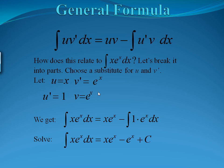Once we have our u and our v', we need to find u' and v. So u is x and v' is eˣ. To get u', we take the derivative of u — the derivative of x is just 1. To get our v, we take the antiderivative of eˣ, which is eˣ. Once you have all four pieces, we plug this into the general formula. Our original integral x·eˣ dx equals u times v, which is x·eˣ, minus the integral of u'·v dx. u' is 1, v is eˣ. Notice that our second integral is now just eˣ dx — something we know how to integrate.